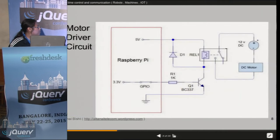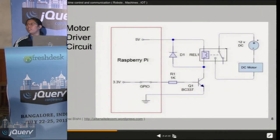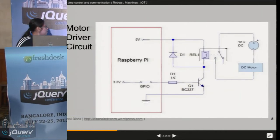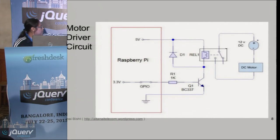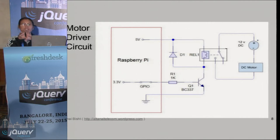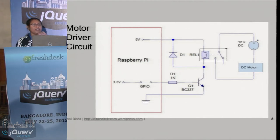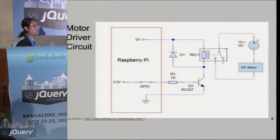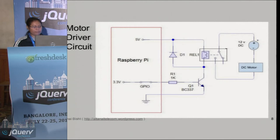This is Raspberry Pi — you know about Raspberry Pi, right? This is a simple switch. Basically, we just activate the GPIO from a PHP script which is hosted on a server. And this is a relay — we obviously need a relay to connect machines in real time.